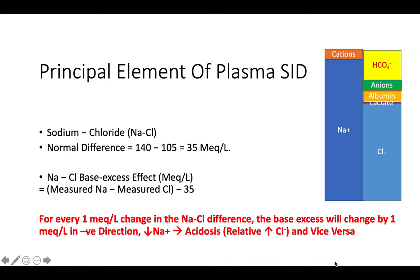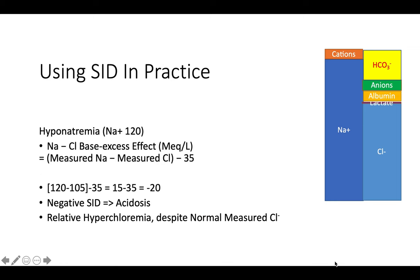A reduction in sodium can cause acidosis due to relative increase in chloride ions, and vice versa. Hypernatremia can lead to alkalosis because of a relative decrease in chlorides. For example, in hyponatremia with sodium of 120 and normal chloride of 105: 120 minus 105 minus 35 equals minus 20 — a negative strong ion difference indicating acidosis, reflecting relative hyperchloraemia despite normal chloride levels.